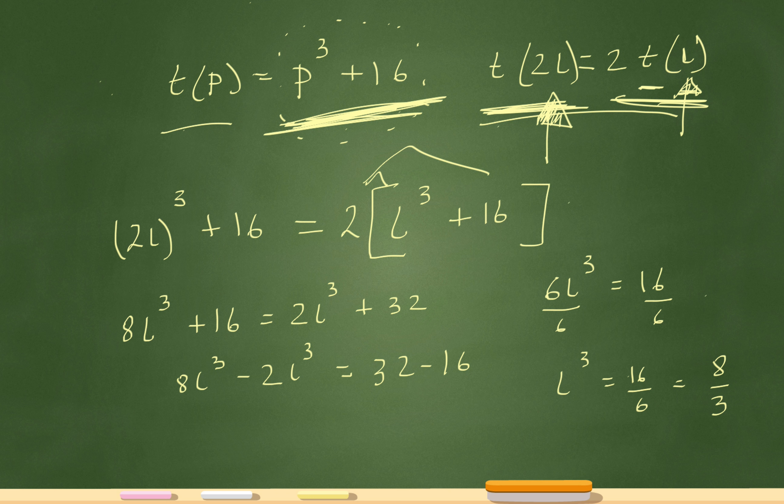So I know that l cubed, wait, can I write this now? Let's go up here. So we know that l cubed equals 8 over 3. Now, here comes a little bit of a tricky part, right? We're trying to figure out what l is. So how are we going to get to that?